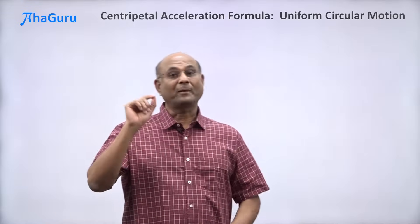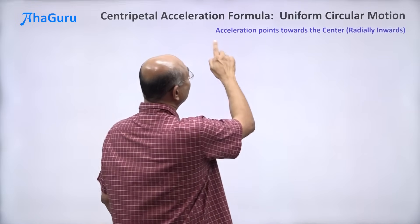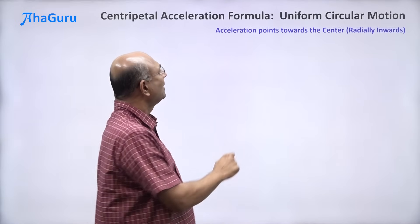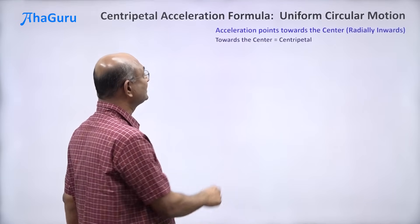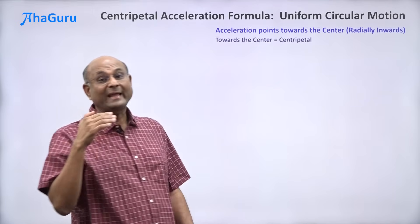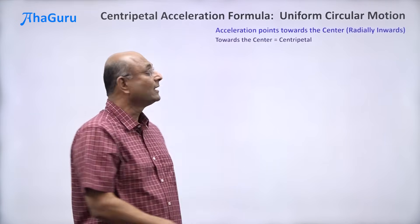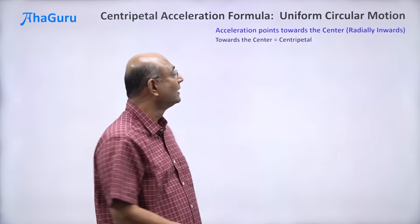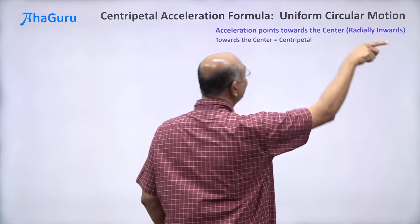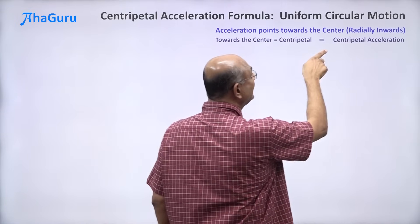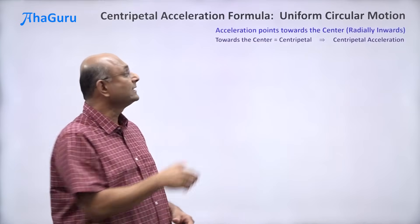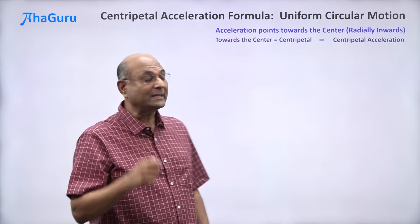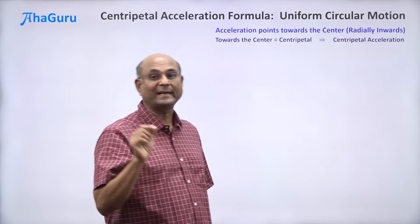For a particle in uniform circular motion, the acceleration points towards the center — it is radially inwards. There is a word for this: centripetal. If something tries to seek or move towards the center, we call it centripetal. If something tries to run away from the center, we call it centrifugal. Here the acceleration is pointing towards the center, so we call this centripetal acceleration.